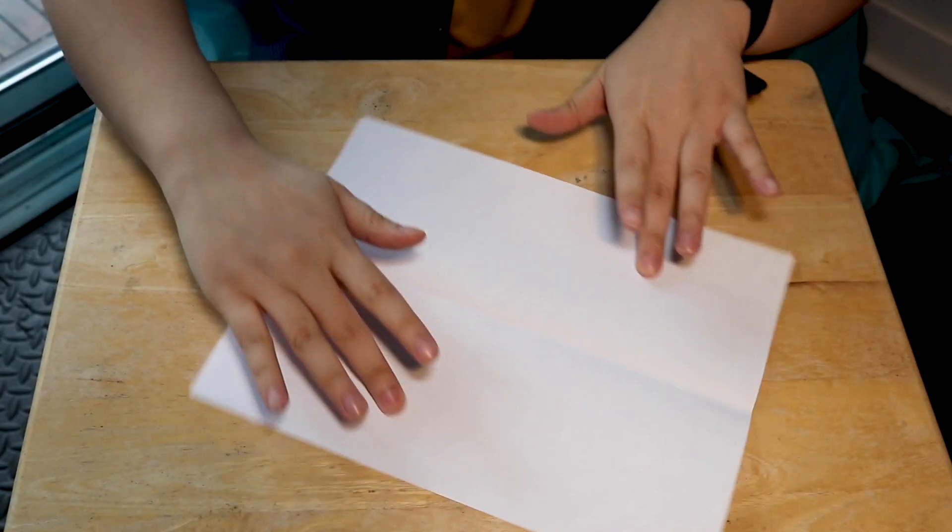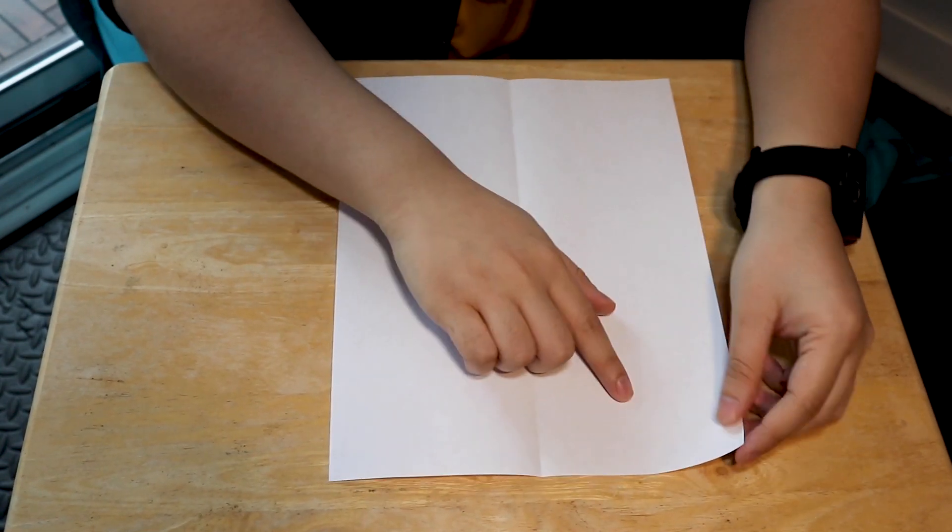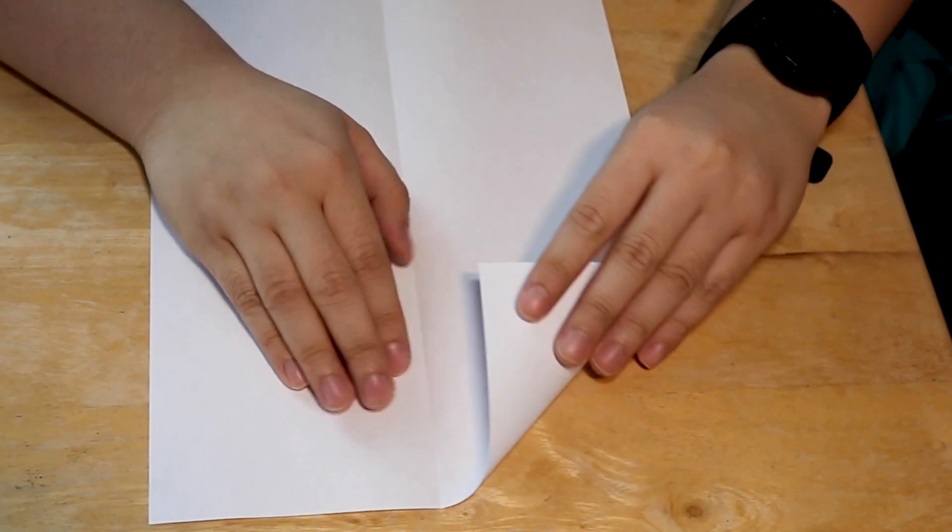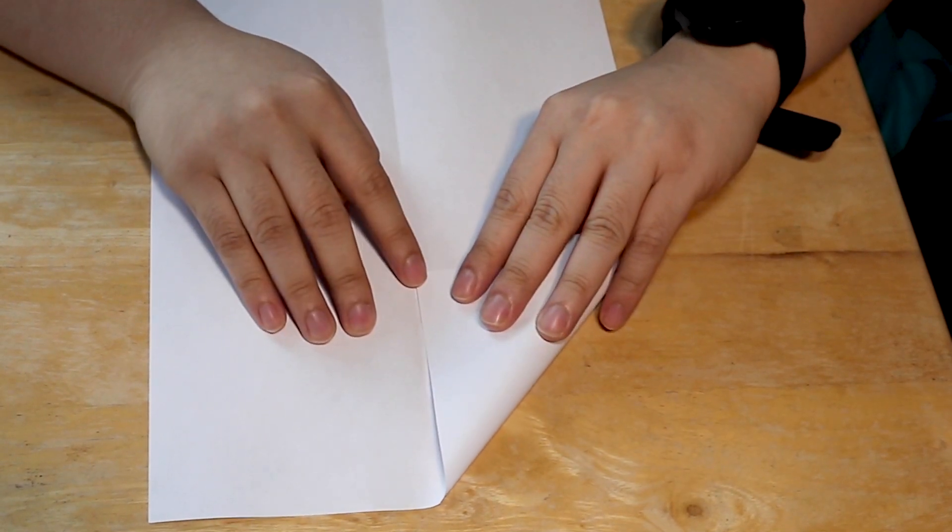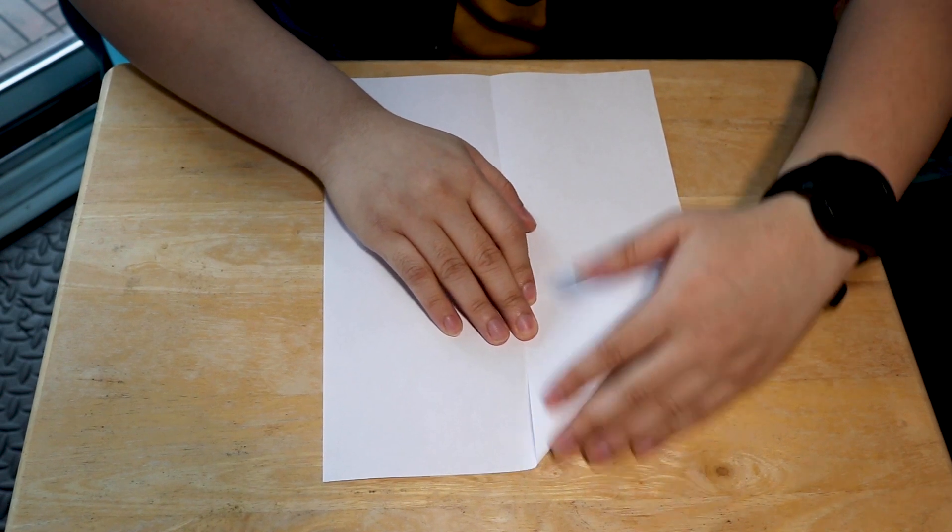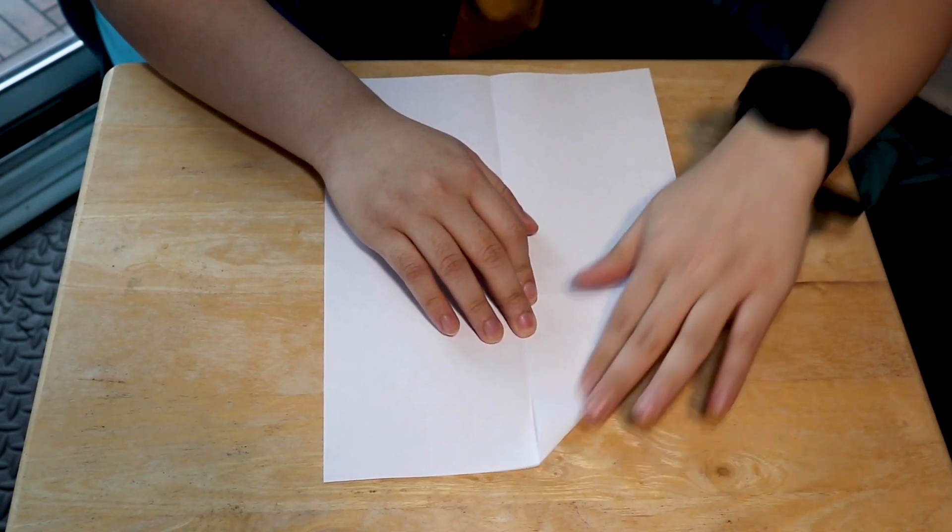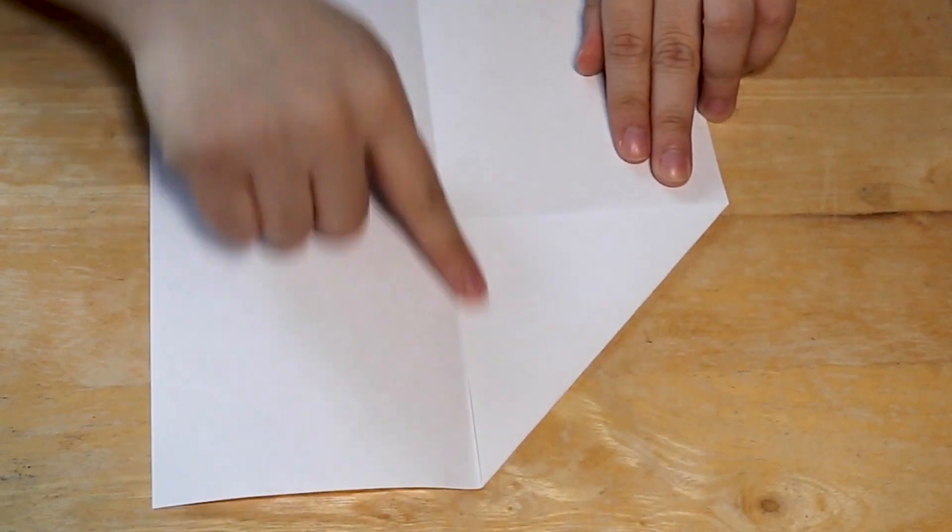Now what we're gonna do is we're gonna flip the page over like this and we're going to grab the top corner of the paper and fold it so that it meets the center crease right here. We're kind of trying to make it look like a triangle. Like that! There we have it. A triangle.